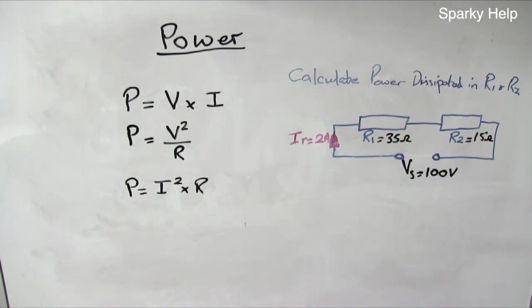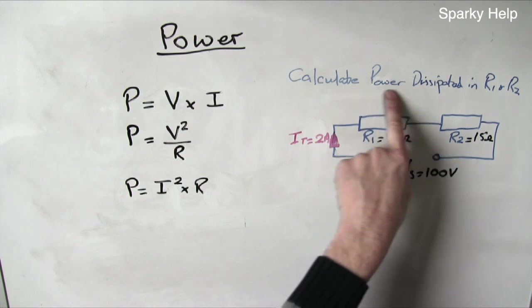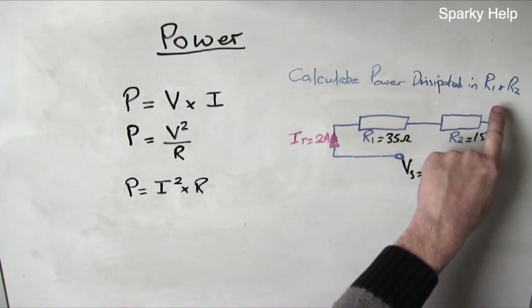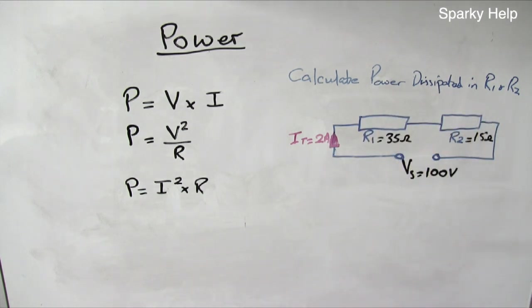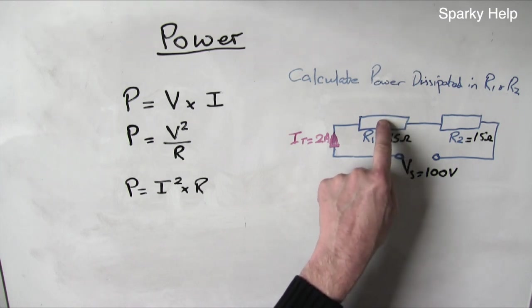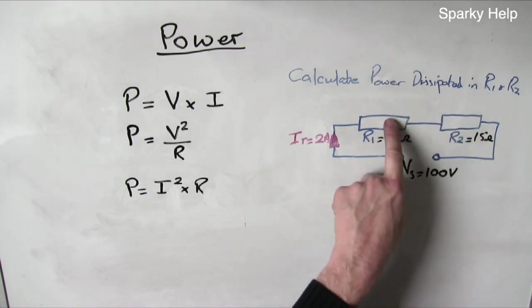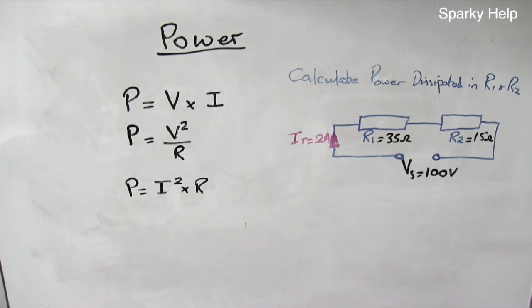So here we have the same circuit. Calculate power dissipated in R1 and R2. Power dissipated basically means how much is this using or losing in each of these resistors. So all it's basically saying is calculate the power in each of those resistors.